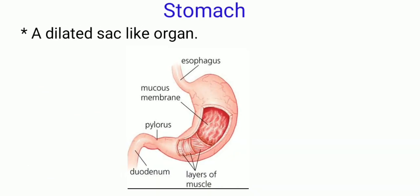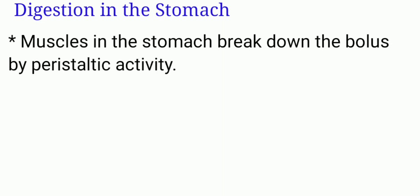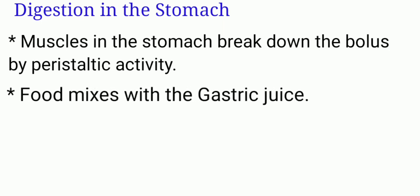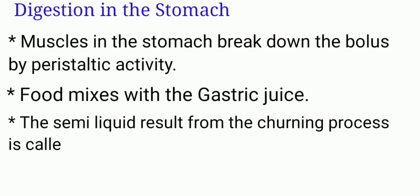The stomach is an enlarged bag-like region of the gut. There are rings of muscle called sphincters around the entrance and exit to the stomach. These muscles act like valves. The muscles in the stomach wall break down the bolus by peristaltic activity. This churns up the food and mixes it with a substance called gastric juice. The semi-liquid result of this churning process is called chyme.